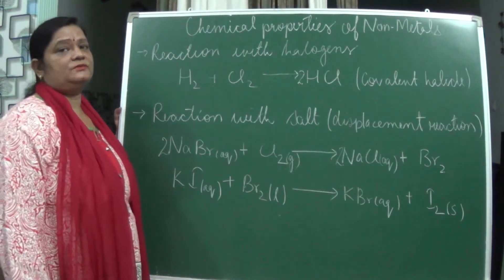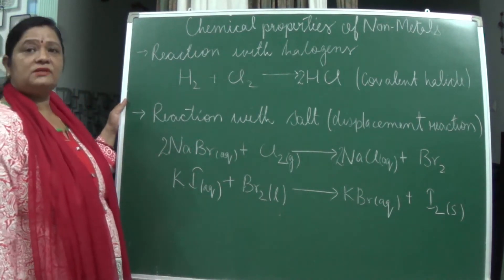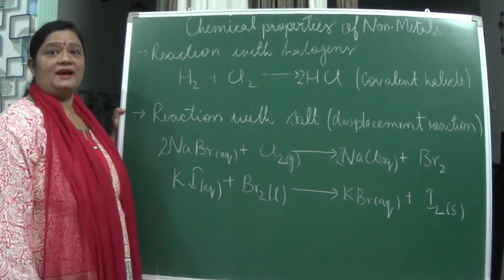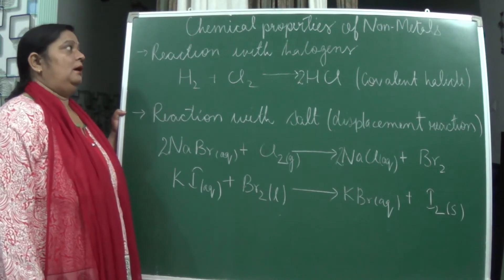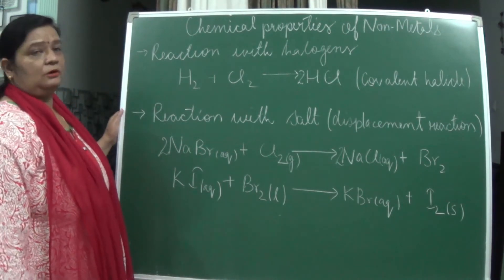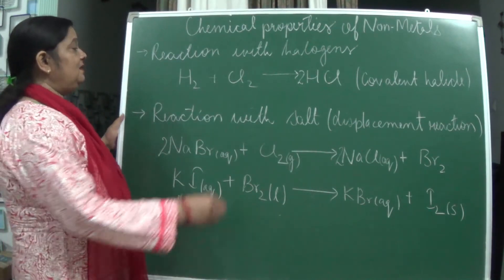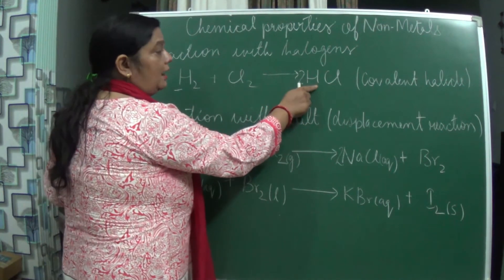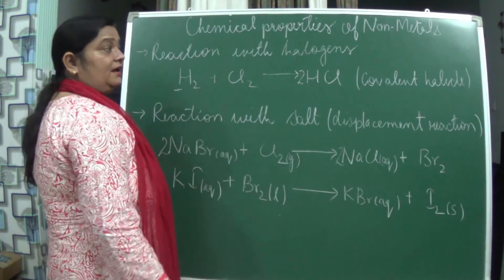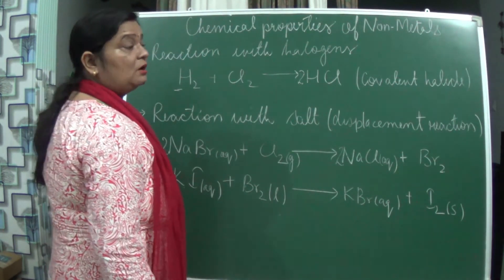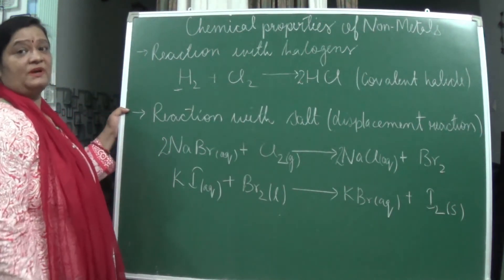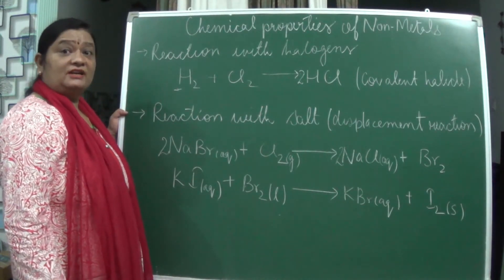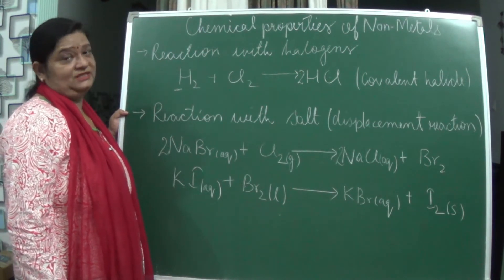Now let us see the reaction of non-metals with halogens — the group 17 elements: fluorine, chlorine, bromine, iodine. Non-metals react with these halogens and form covalent halides. For example, hydrogen is a non-metal and it reacts with chlorine to form hydrogen chloride, where the bond is a covalent bond — so we call it a covalent halide. Likewise, phosphorus pentachloride PCl5 is also formed — phosphorus combines with chlorine to form PCl5.